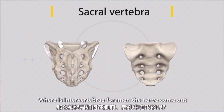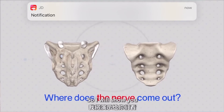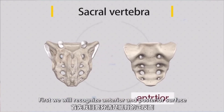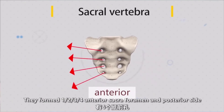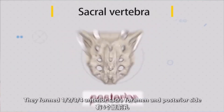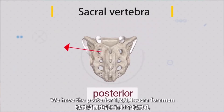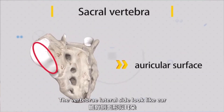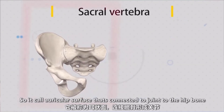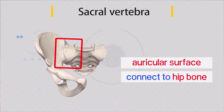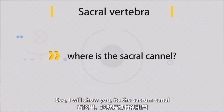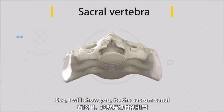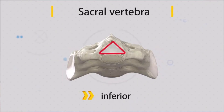Where is the intervertebral foramen where the nerves come out? On the anterior surface, the intervertebral foramina form the anterior sacral foramina — one, two, three, four. On the lateral side, it looks like an ear, so that's what we call the auricular surface. The auricular surface connects via a joint to the hip bone. The vertebral canal continues as the sacral canal, which then comes out at the sacral hiatus.